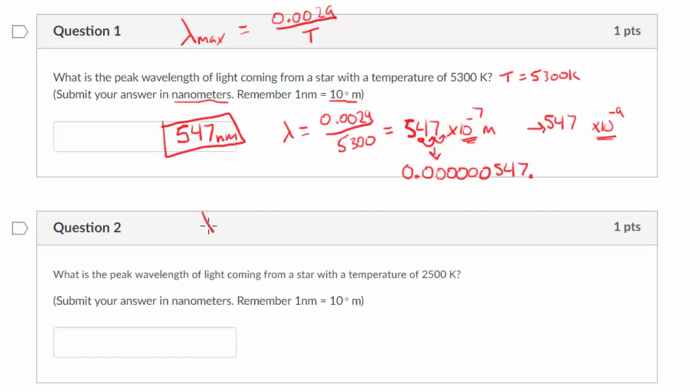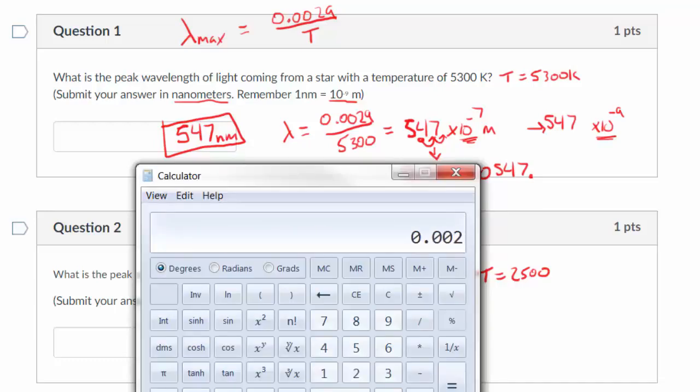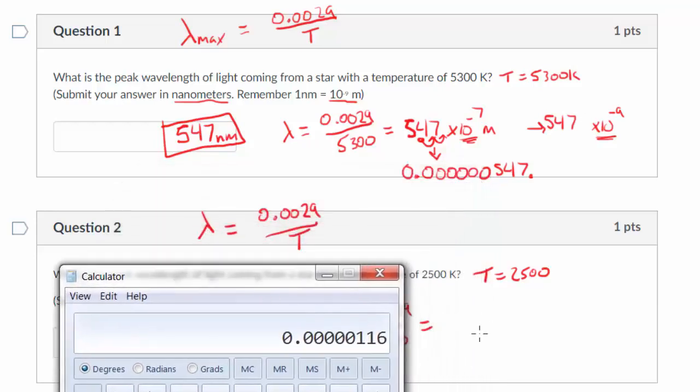So let's look at the next one. Lambda again equals 0.0029 divided by t. And in this case, t equals 2500. So it's really the exact same problem, just with different values. So let's solve for lambda. It's going to be 0.0029 divided by 2500. So now it didn't give it to me in scientific notation. It's giving it to me as a decimal.